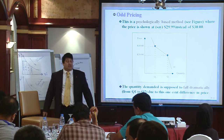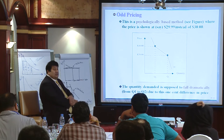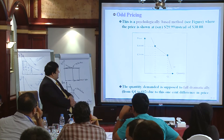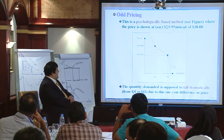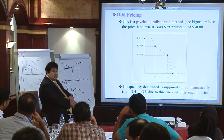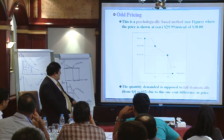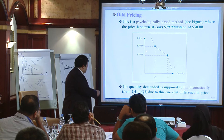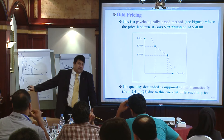Then there is odd pricing — a psychological, esteem-based approach. The way our brains are wired, we give far more emphasis to the first digit than any other. So we think $29.99 is $20 rather than $30, although there is only one cent difference. And $29,990 feels much cheaper than $30,000. There is a significant drop in volume when you go from $29 to $30. This psychological method is used all the time.